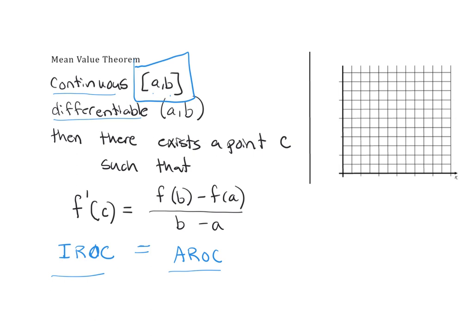Let's put this on a graph to give you a visual. We have an endpoint a and an endpoint b. The average rate of change on that interval is the secant line connecting a to b — this red line. If the function is continuous and differentiable, then there must be somewhere a point c where the tangent line — that instantaneous rate of change — is equal to the average rate of change. I'm drawing parallel lines here to show that the instantaneous rate of change at this point equals the average rate of change of the interval.